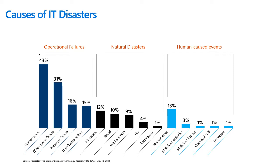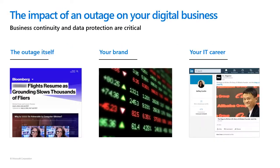The three categories are: operational failure, such as power failure, IT hardware failure, network failure, or software failure. A majority is also caused by natural disasters, like your data center being hit by a hurricane, typhoon, flood, fire, or earthquake. It can also be caused by human-caused events. A vast majority of human-caused events is because of standard human error — somebody clicked something they weren't supposed to. In second place is malicious access by an insider or even an outsider.